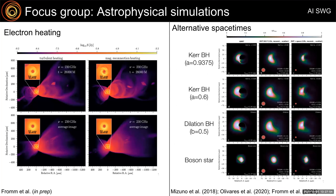On the left are images produced by Christian Fromm for an M87-like system subject to different assumptions about the electron heating prescription, resulting in different observed emission as the region gets lit up differently and appears different on the sky. On the right are examples of several black hole shadow images produced by Yosuke Mizuno in a variety of different spacetimes, notably including some alternatives to Kerr, demonstrating how these different choices can modify the observed source morphology.